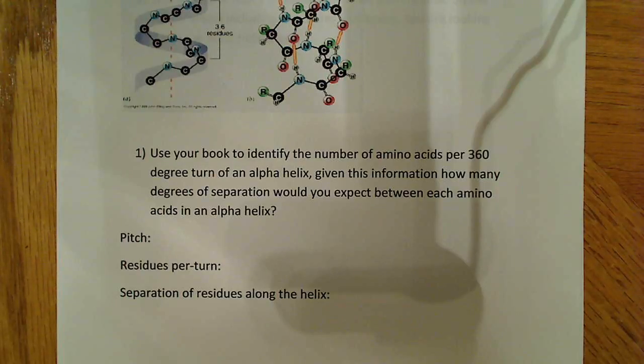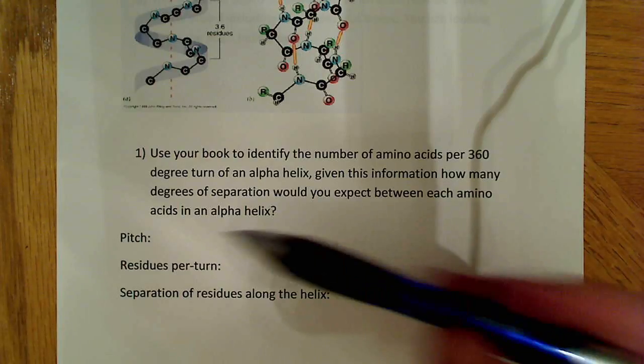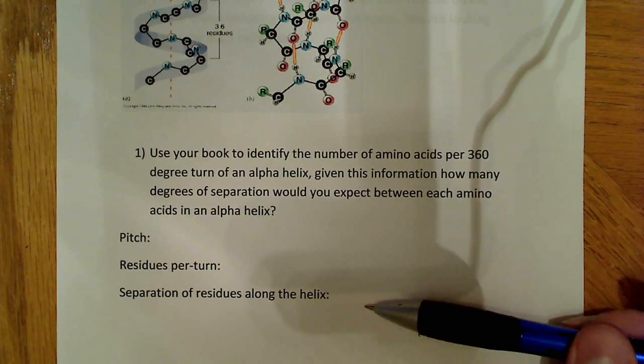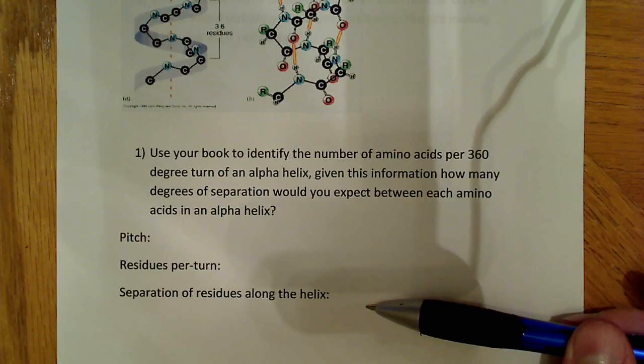So, it says, use your book to identify the number of amino acids per 360 degree turn of an alpha helix. Given this information, how many degrees of separation would you expect between each amino acid in an alpha helix? So, basically, what they're asking us to do here is say what the pitch is, how many residues per turn, and the separation of the residues along the helix.